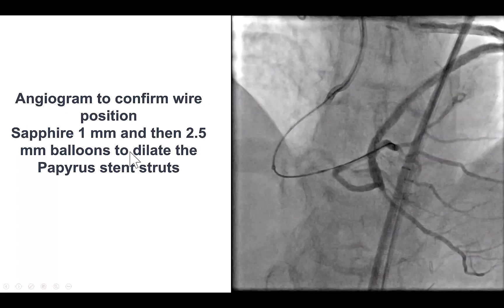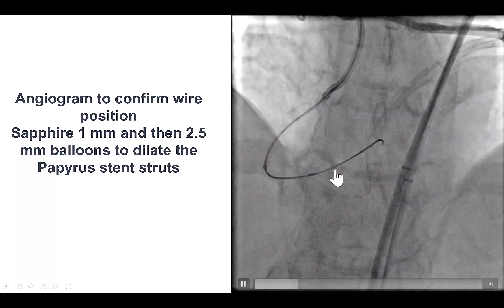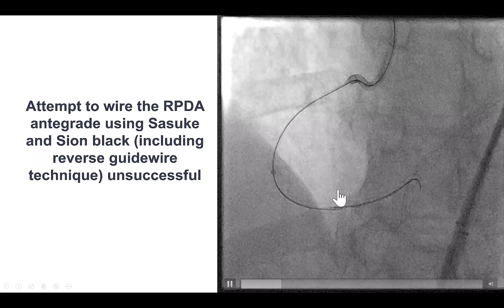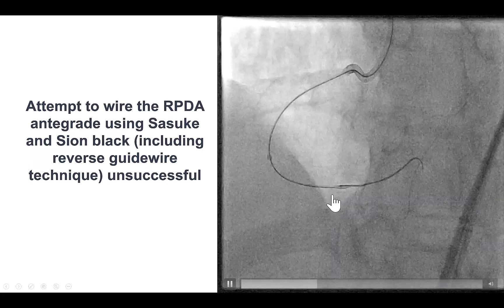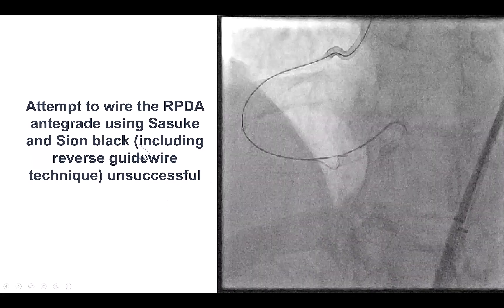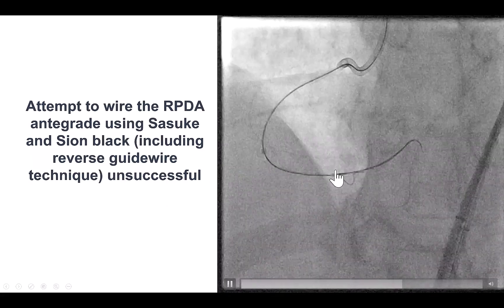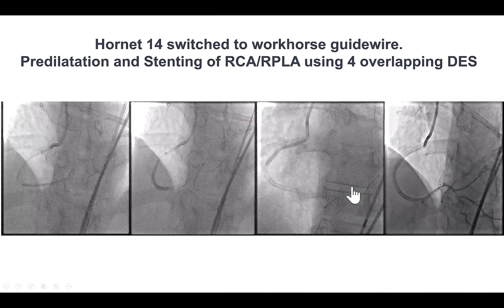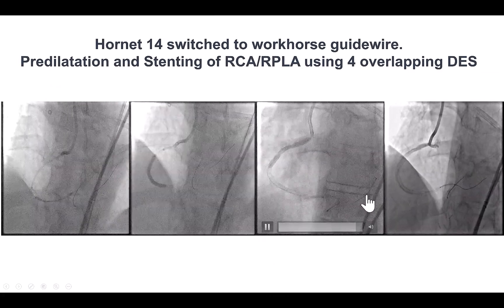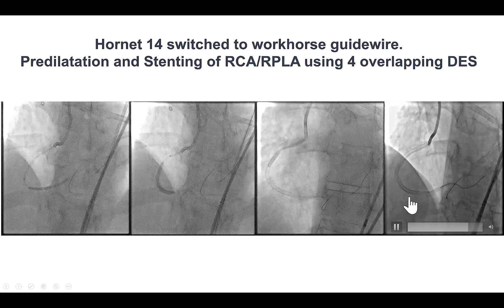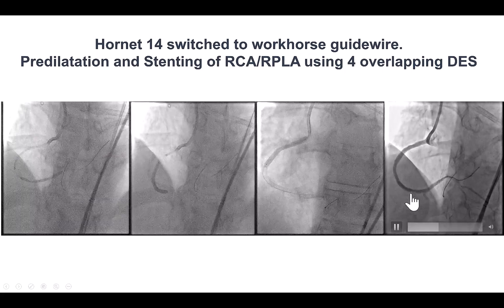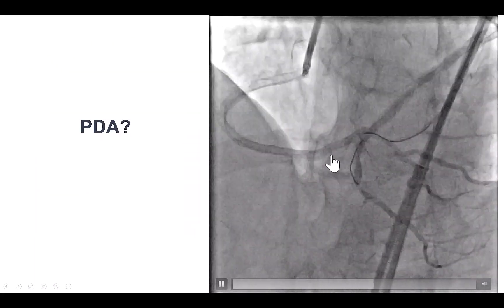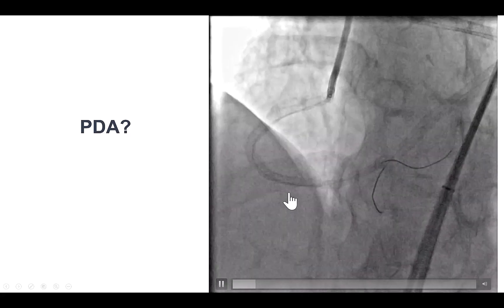We used a small balloon — Sapphire 1.0 — and then larger balloons to dilate through the papyrus. We tried to advance a guide wire into the PDA across the bifurcation, but despite using a Sasuke dual-lumen microcatheter, we were unable to get through that area. We decided to stent — placing four drug-eluting stents from the posterolateral all the way into the proximal RCA — which restored good antegrade flow. However, flow was not optimal inside the PDA, as seen from the dual injection.